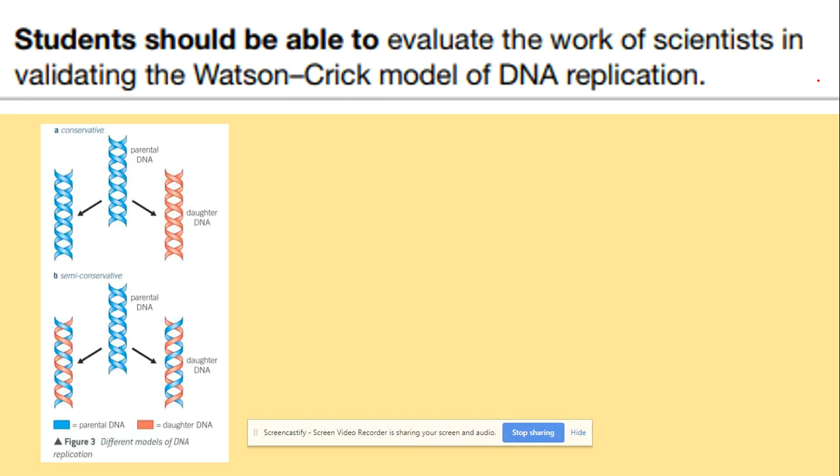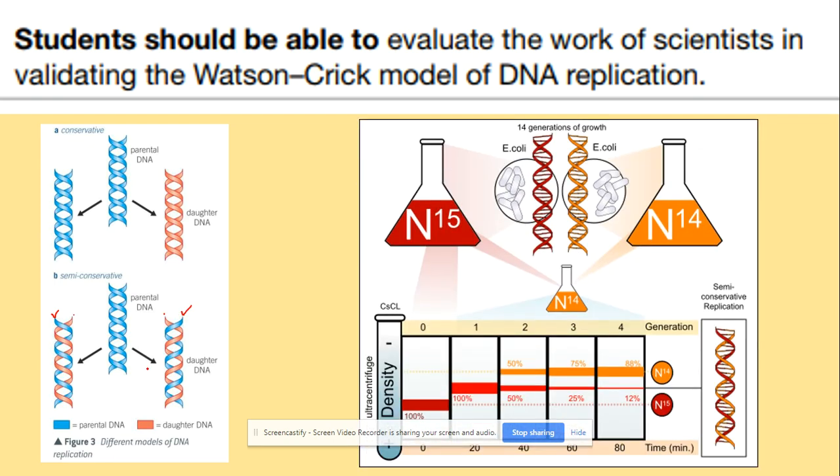You need to be able to evaluate the experiment which was done to provide the evidence for semi-conservative replication, to prove that those strands contain one of the old DNA and the new strand. It was done by using the isotopes N14 and N15, and the difference between those isotopes is the density. N15 is more dense, N14 is less dense.